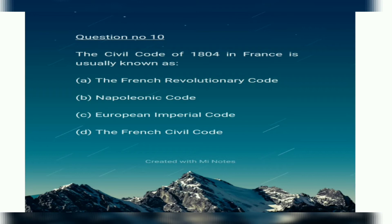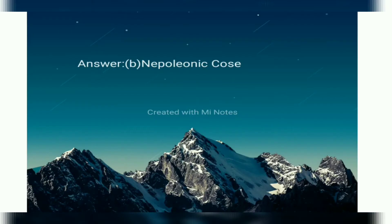Now our final and very important question. The Civil Code of 1804 in France is usually known as: A. French Revolutionary Code, B. Napoleonic Code, C. European Imperial Code, D. French Civil Code. The correct answer is the Napoleonic Code. The Civil Code of 1804 is also called the Napoleonic Code.